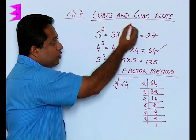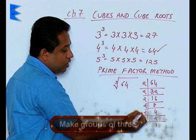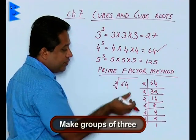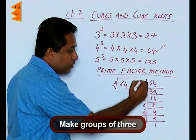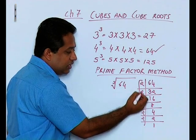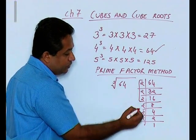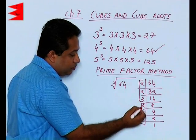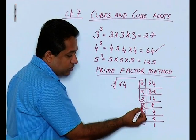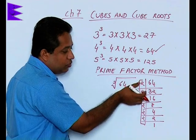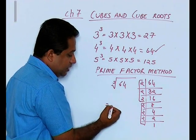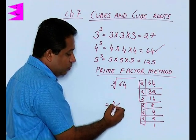Now in case of cube roots, we have to make groups of 3. In square roots we were making groups of 2, here we make groups of 3. So this is one group, all the three numbers are same. We have 1, 2, 3 2s here and 3 2s here. So we can say that cube root of 64 is 2 multiplied by 2, that is 4.